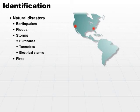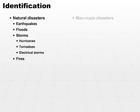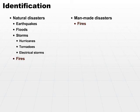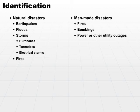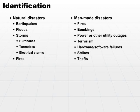In addition to natural disasters, there are also man-made disasters, such as fires. Notice that fire was both natural and man-made because it depends on how it actually started. Other man-made disasters include bombings, power outages or other utility outages, terrorism, hardware or software failure, strikes, and large-volume theft. Any of these are disasters which can have a profound effect on your ability to do business.